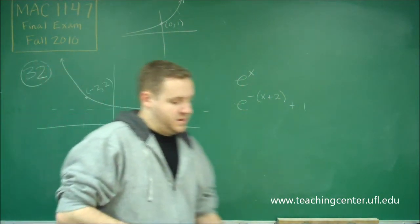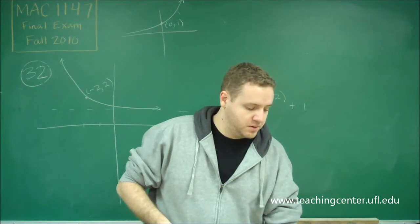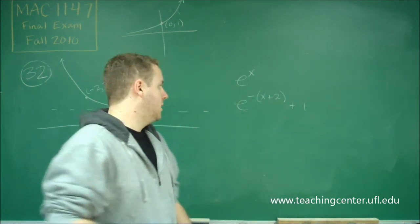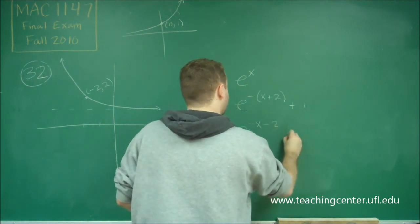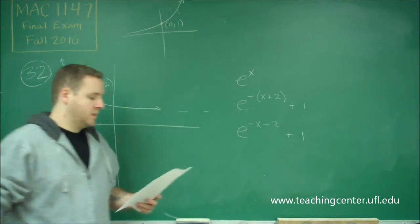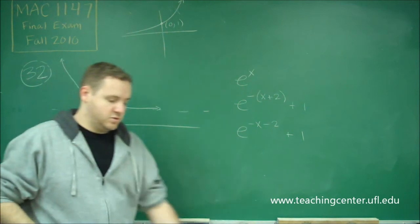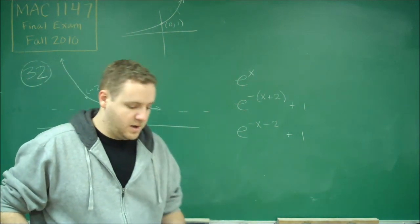So your answers are written with that expanded out. So we just need to distribute that negative sign. And we get e to the minus x minus 2 plus 1, which gives us answer choice D.